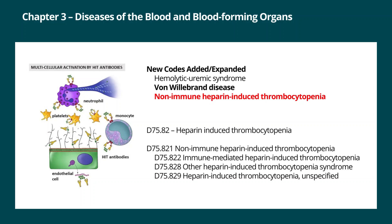The third set of codes expanded are for heparin induced thrombocytopenia from category D75.82. These codes specify whether heparin induced thrombocytopenia is non-immune mediated versus immune mediated, along with other specified and unspecified codes. D75.822 is immune mediated heparin induced thrombocytopenia, whereas D75.821 is for non-immune heparin induced thrombocytopenia. There is a special instruction at D75.82 to use an additional code for adverse effect of heparin, wherever applicable.